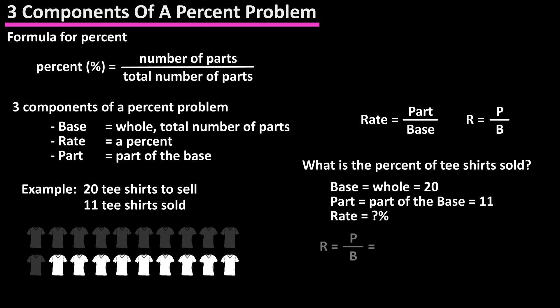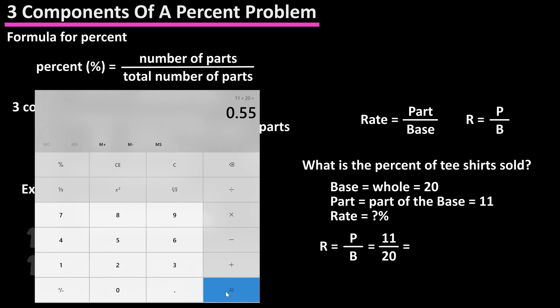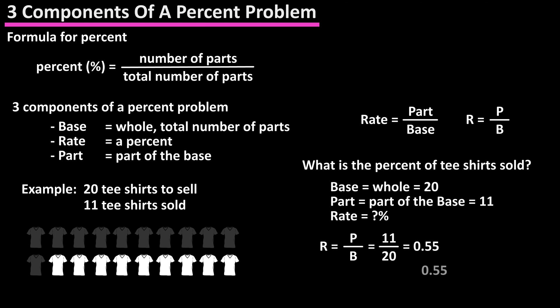Using our formula, we have rate equals part divided by base. So we have rate equals 11 t-shirts sold over 20 total t-shirts. Using a calculator, 11 divided by 20 equals 0.55. To convert a decimal to a percent, we just move the decimal two places to the right, attach a percent sign, and we have 55% as a final answer.